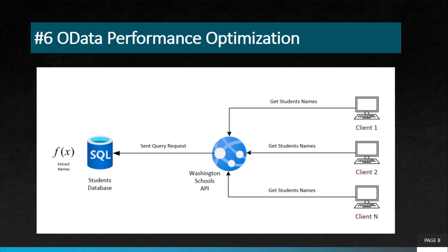The sixth project is OData performance optimization. There are many ways to improve efficiency — poorly written creation code can cause slow responses and UI failures. To optimize OData performance, you need to consider caching, batch processing, and query optimization.